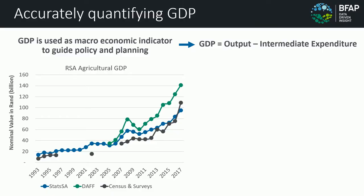In terms of decision making, GDP is probably one of the most well-known economic indicators whereby economies are measured, and the agricultural economy's contribution to South Africa's economy is also measured. On the left-hand side, you'll see the green line depicts the production accounts published by the Agricultural Department. The blue line depicts the Stats SA official estimate that is published, and then the grey line are our own estimates where we compare the GDP number to these other lines.